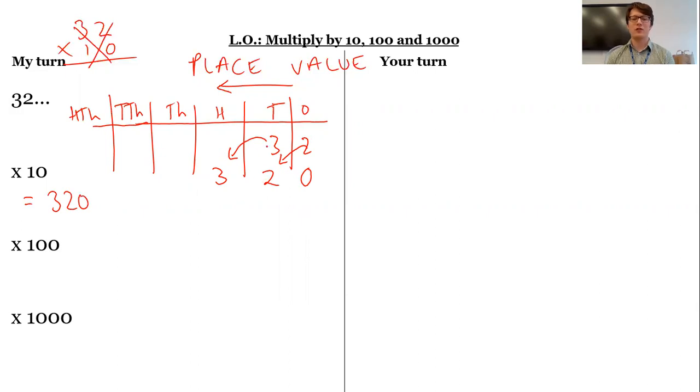If I want to times by 100, then I'm going to be moving two digits along. So one or two columns along two, so I'm going from 10s to 1,000s. I'm going from 1s, 1, 2, to 100s. So then I need a placeholder in the 1s and a placeholder in the 1s, and I get 3,200.